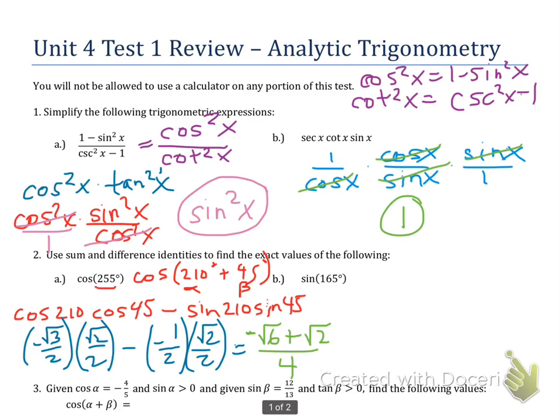So looking at the last question we have here with question 2, sine of 165, I'm going to rewrite 165 as, I'm going to do difference this time. I'm going to use the same numbers that I just did, 210 and 45, because I already know the ratios for that. So I could get 165 by simply saying 210 minus 45.